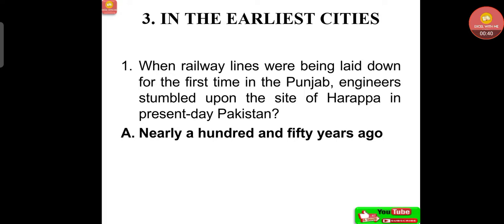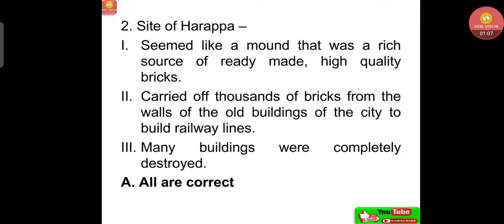When railway lines were being laid down for the first time in Punjab, engineers stumbled upon the site of Harappa in present-day Pakistan — that was nearly a hundred and fifty years ago. These engineers stumbled upon the site, and it seemed like a mound that was a rich source of ready-made high-quality bricks. They carried off thousands of bricks from the walls of old buildings of the city to build railway lines, and many buildings were completely destroyed.